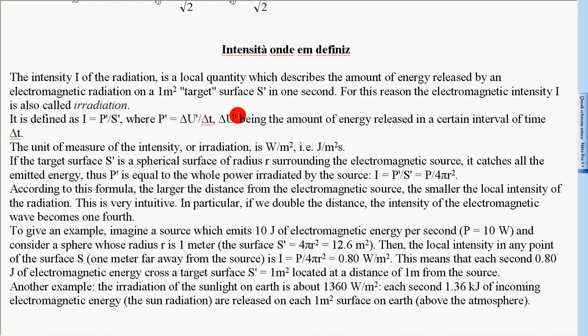ΔU' being the amount of energy released in a certain interval of time ΔT. The unit of measure of the intensity or irradiation is Watt on m², i.e. Joule on m² second.